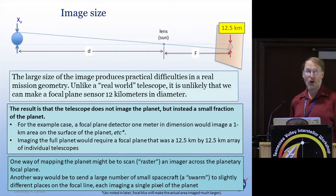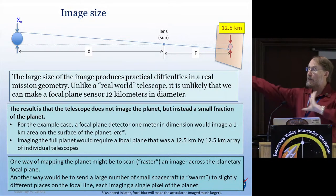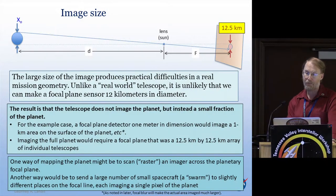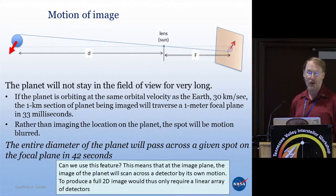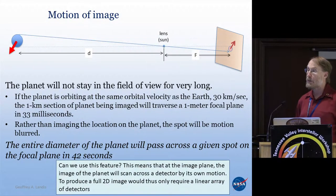Another approach, talking about things like Starshot, where we send out perhaps hundreds or maybe thousands of tiny spacecraft — we might be able to send one spacecraft out to each point in the focal plane. So we send out a thousand spacecraft and each one looks at a point on the planet. It may not be an insuperable problem. But a problem is the motion of the image. The magnification is high and the planet is moving. If it's orbiting at Earth's velocity, 30 kilometers a second, that one kilometer part will traverse in 33 milliseconds. The entire diameter of the planet will pass across a given focal plane in about 42 seconds.